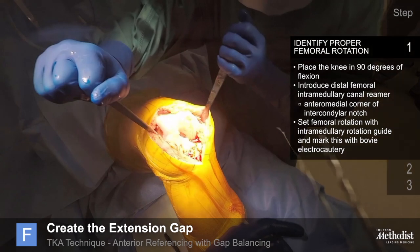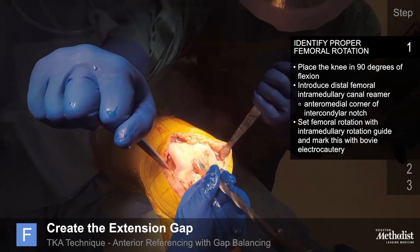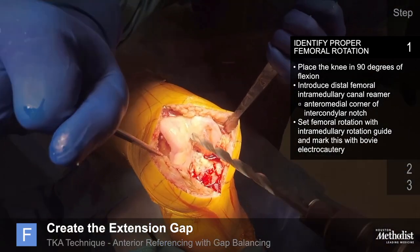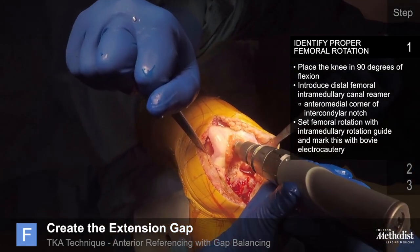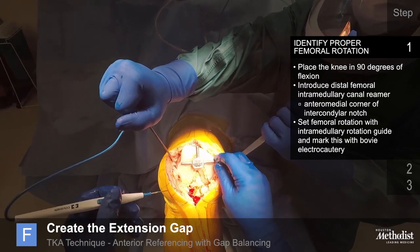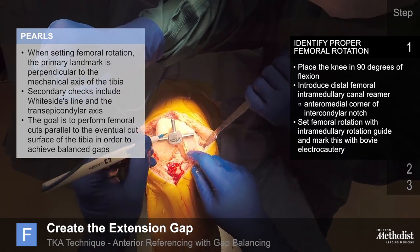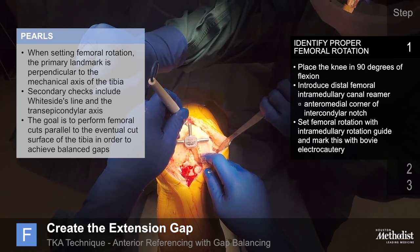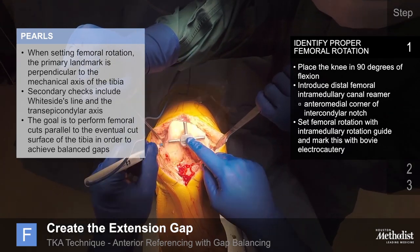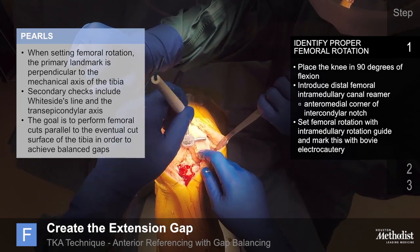There are three steps I pay particular attention to during total knee arthroplasty: femoral rotation, balancing the flexion and extension gaps, and tibial rotation. Place the knee in 90 degrees of flexion and introduce the distal femoral intramedullary canal reamer, best placed in the anteromedial corner of the intercondylar notch in line with the trochlear groove. Set the femoral rotation with the intramedullary rotation guide and mark this with bovie electrocautery. The primary landmark for femoral rotation is perpendicular to the mechanical axis of the tibia; secondary checks include the Whiteside's line and the trans-epicondylar axis. The goal is to perform femoral cuts parallel to the eventual cut surface of the tibia to achieve balanced gaps.